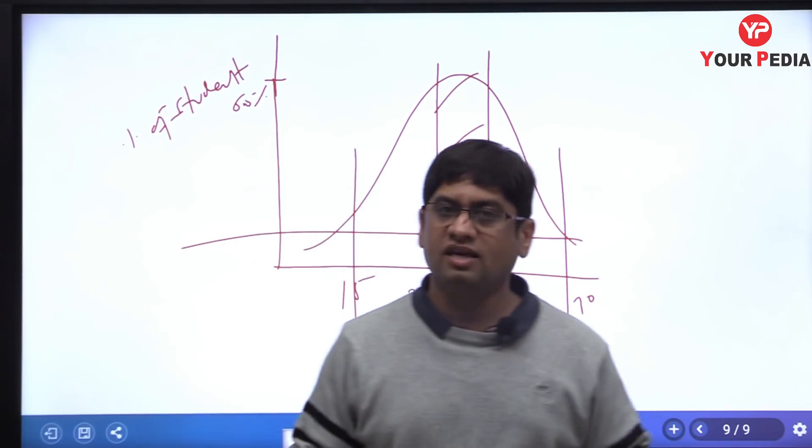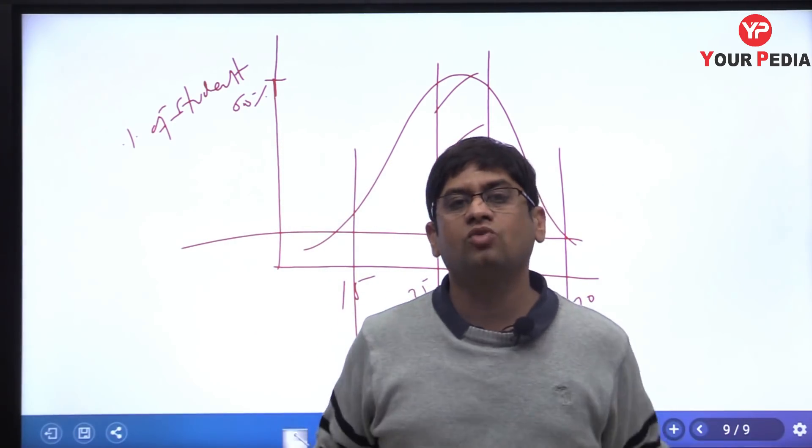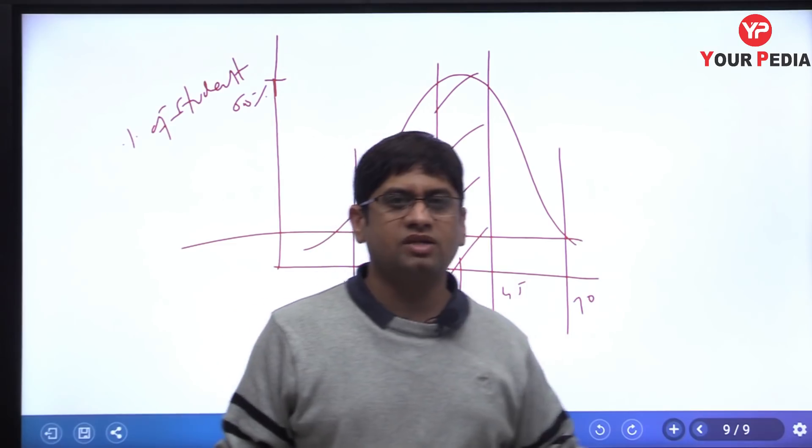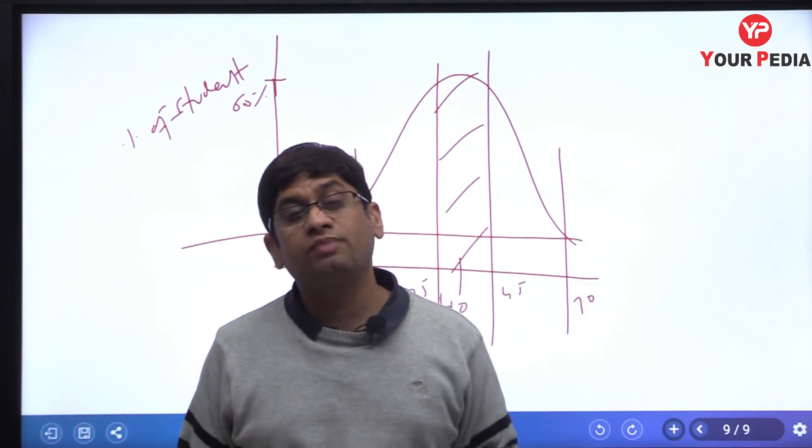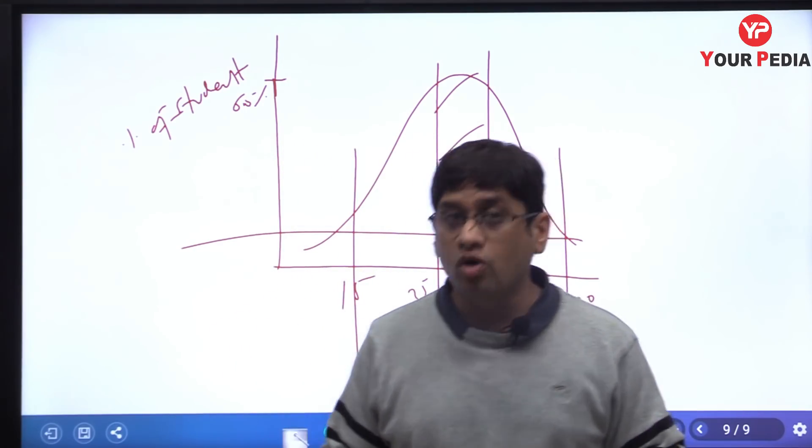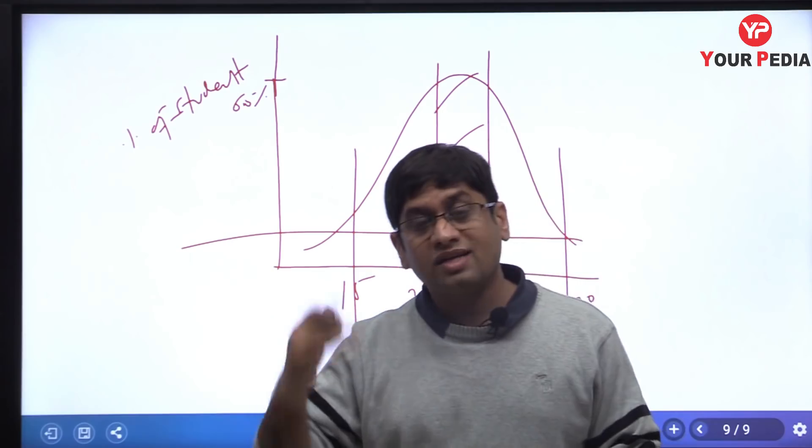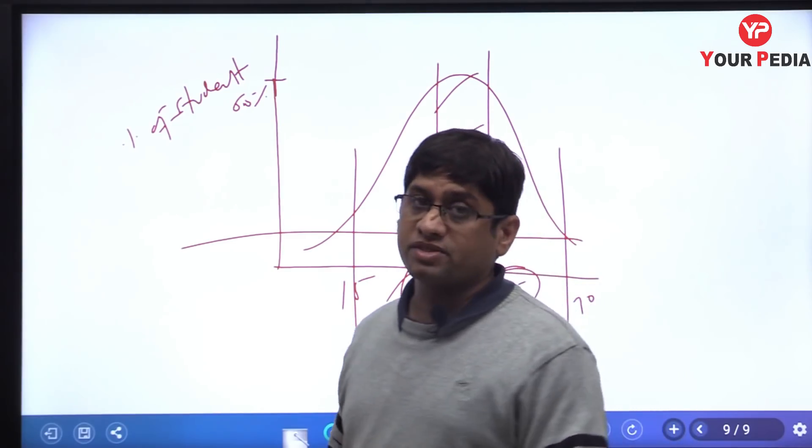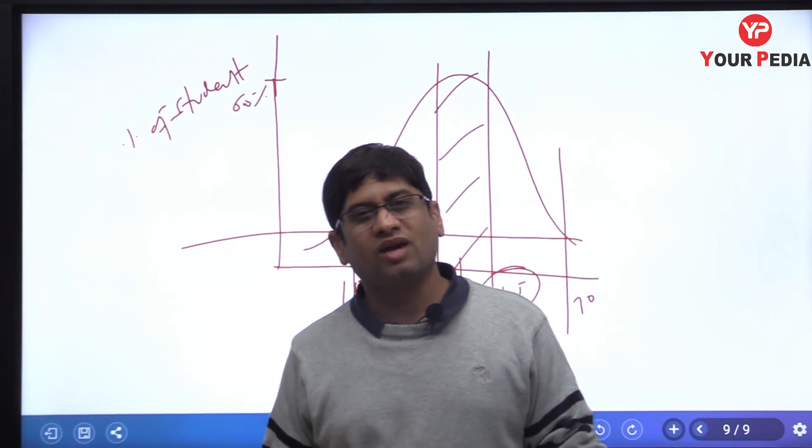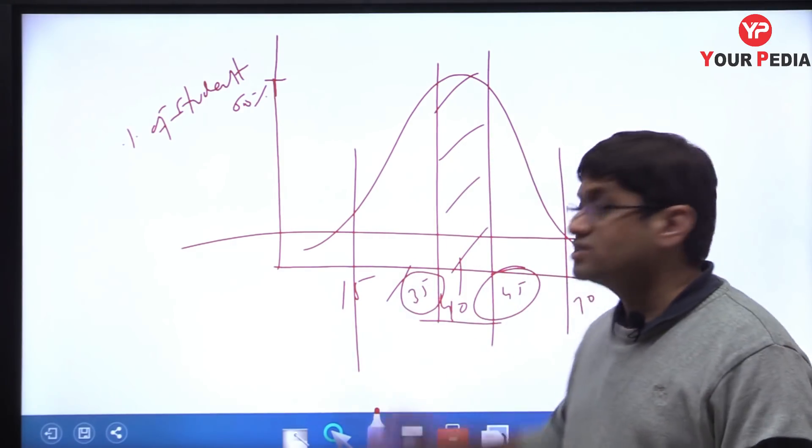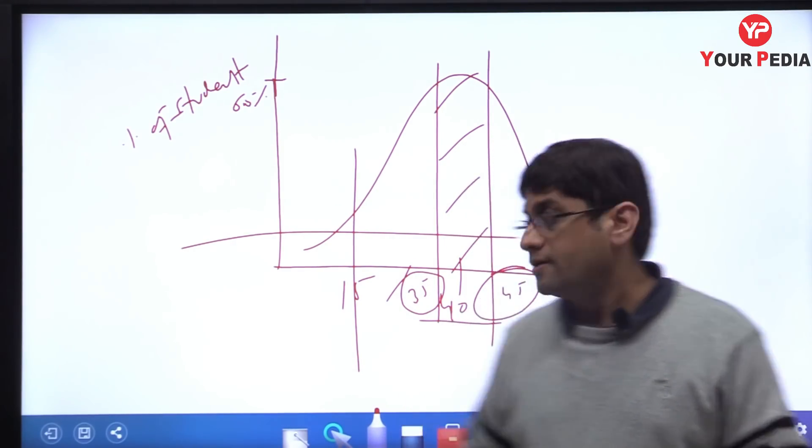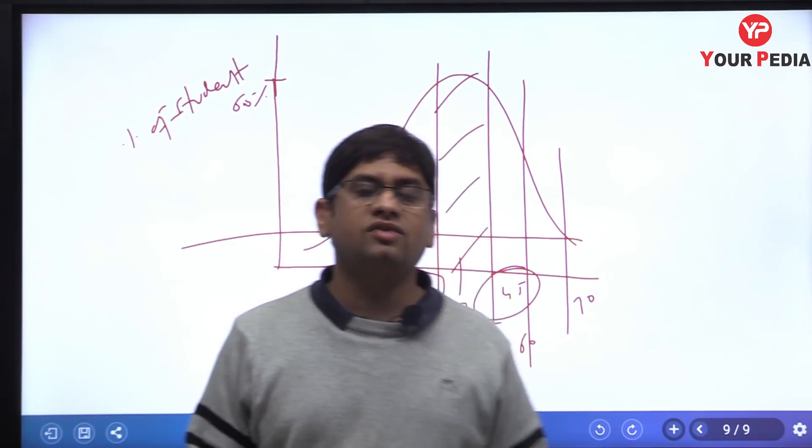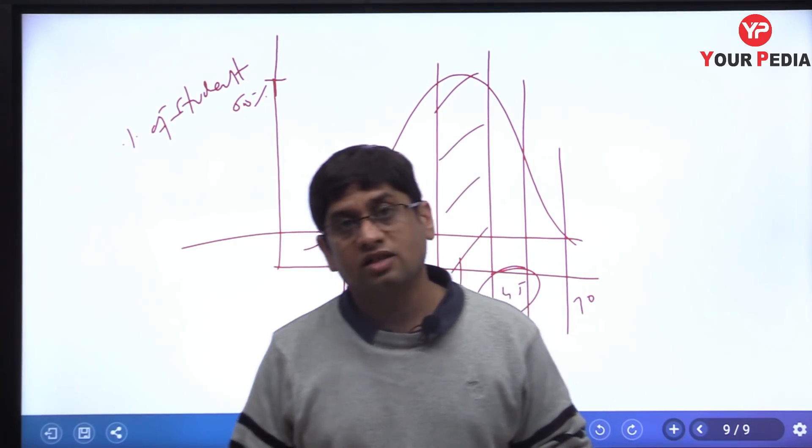And main unki baat nahi kar raha hun jo bina preparation kiye gayi hain. I am talking ki jinhone taiyari kiya tha, padhai karke gaye the, usmein se majority bachcha, 60% bachcha, 40 marks ke plus minus 5 pe hit karega. Aap aapka bhi agar wo cheez hai, aur aapko kaun cheez bachayega, 35 to 45 mein. What can save you, 35 qualify kar gaye tum, 35 to 45 ke beech mein. If your BTech percentage is good, you are saved. You will get some kind of platform. Lekin agar BTech percentage accha nahi hai, to obviously even IIT dawara mein trouble aata hai.